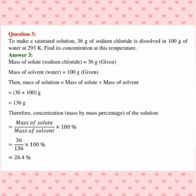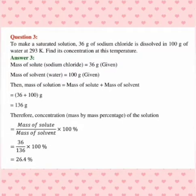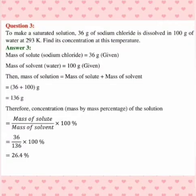Third question is related with numerical based on the concentration. You have to find out by mass by mass percent. Here whichever is there in the large amount is solvent and very low amount is solute. 36 gram of sodium chloride is solute, whereas 100 gram is solvent. Children, here total mass of solution is equal to mass of solute plus mass of solvent. We have 36 plus 100 that is 136 gram. Formula for mass percentage, that is mass of solute upon mass of solution into 100. So 36 upon 136 into 100 that is equal to 26.4.